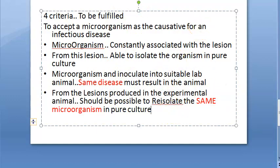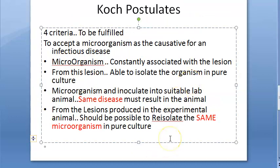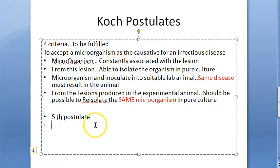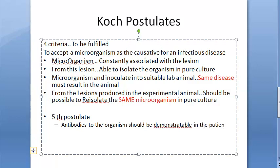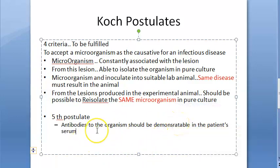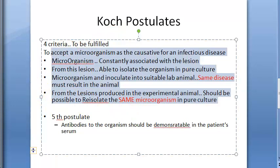Those are the four Koch postulates. A fifth additional criterion was later added, which states that antibodies to the causative microorganism should be demonstrable in the patient's serum. Serum is a constituent of blood. So there are five criteria in total, though traditionally only four are called Koch's postulates.